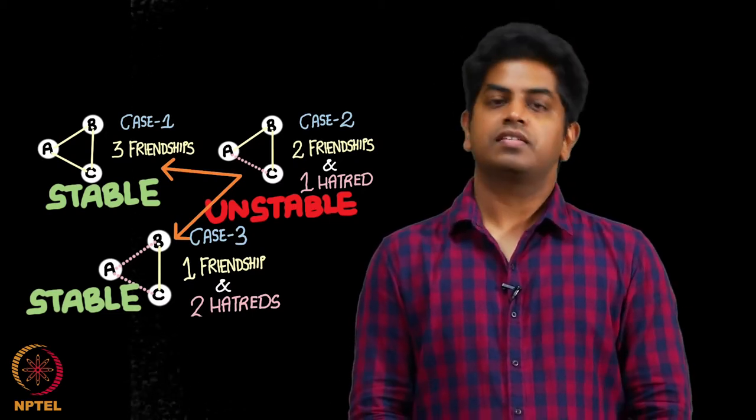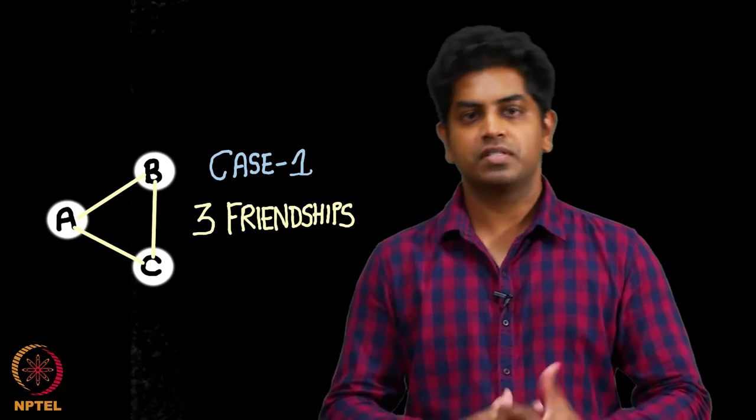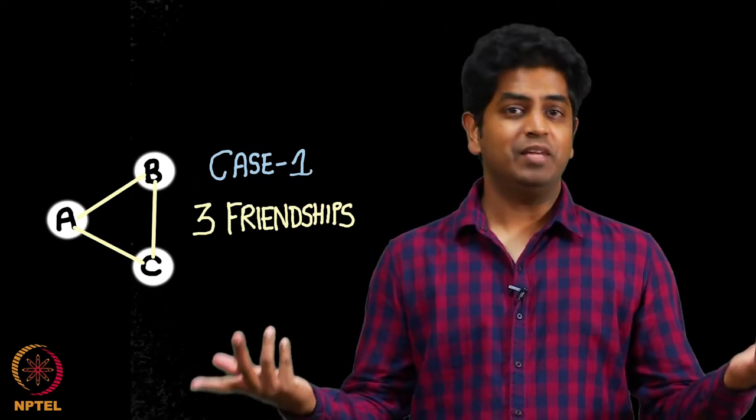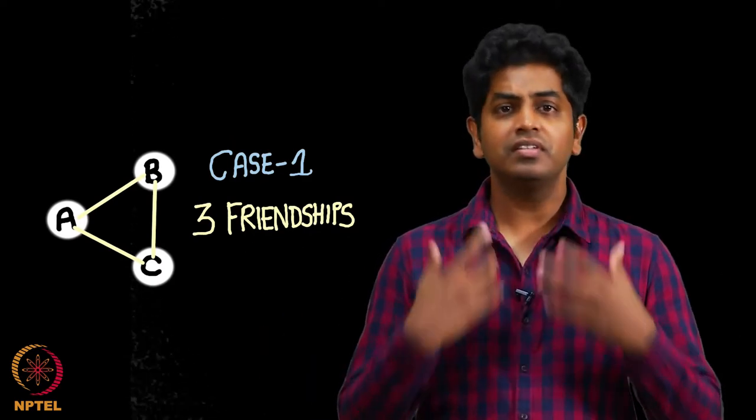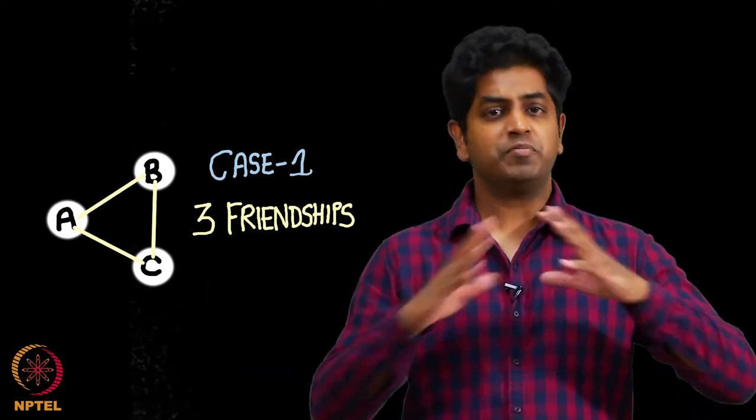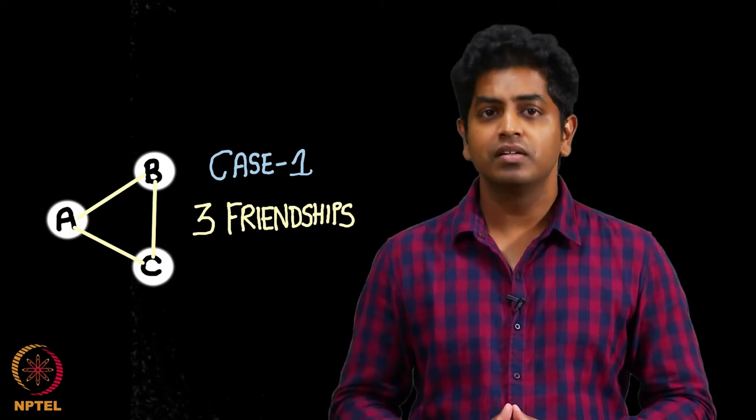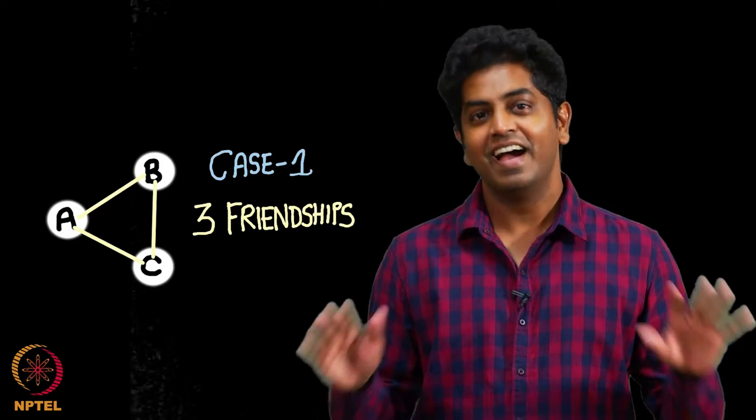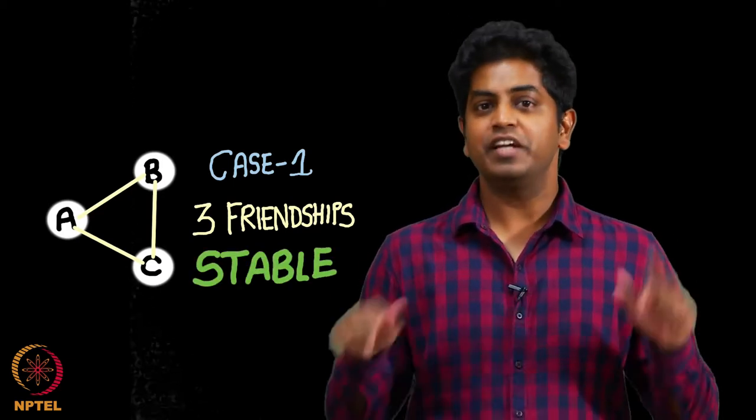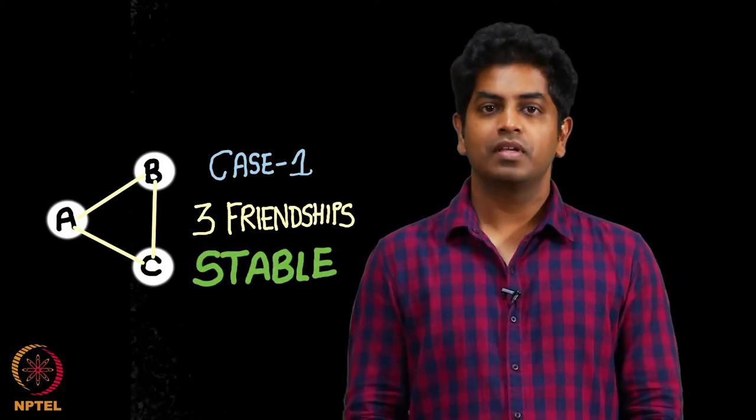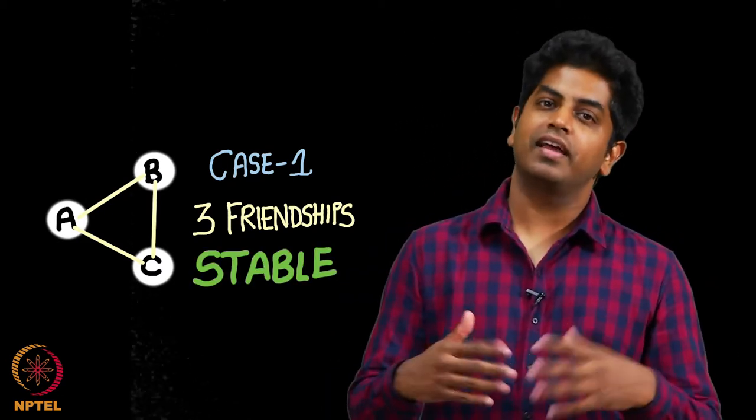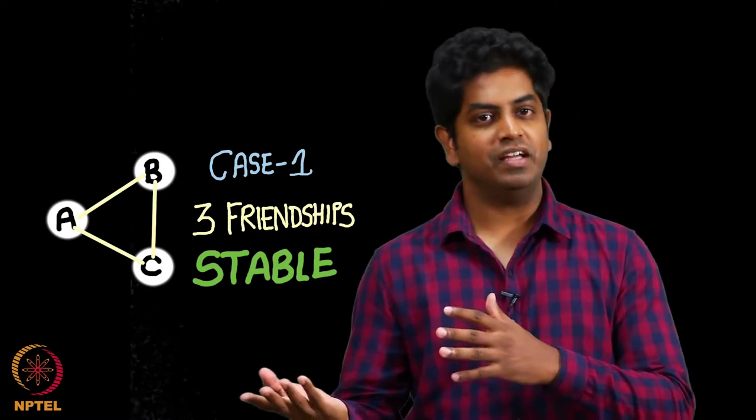So first case, three friendships, a happy world. Need I say more? Three people who are friends with each other, I mean they have a wonderful life. There is absolutely no hatred between anyone, period. There is nothing to study here at least in this chapter. Three friendships is stable. There is no pressure similar to my Ramakrishna example. That is a tough life, here is a happy life.